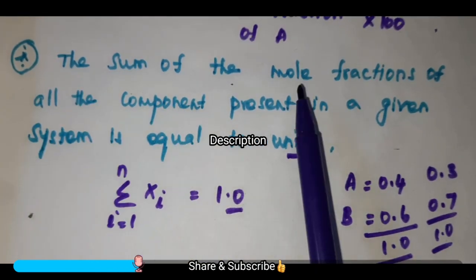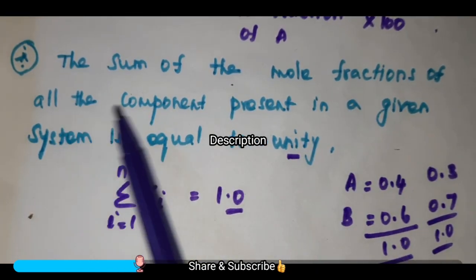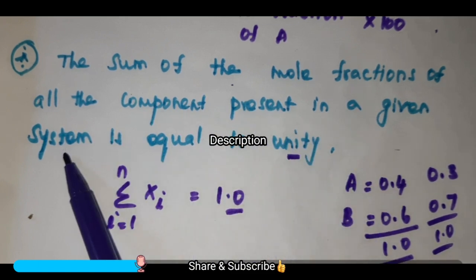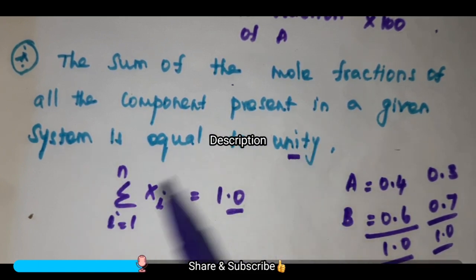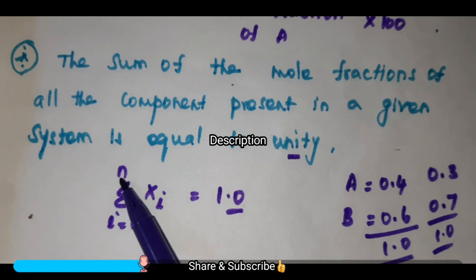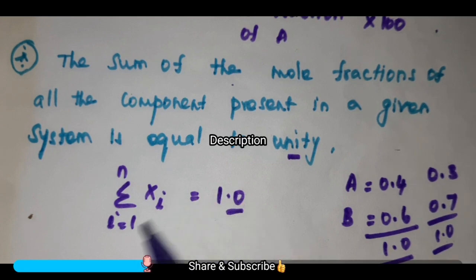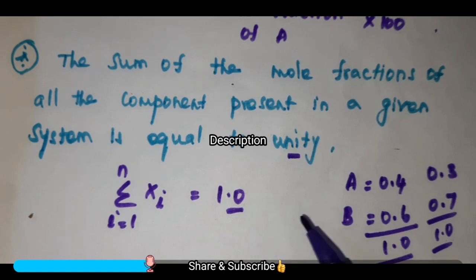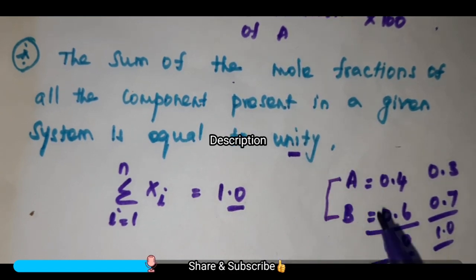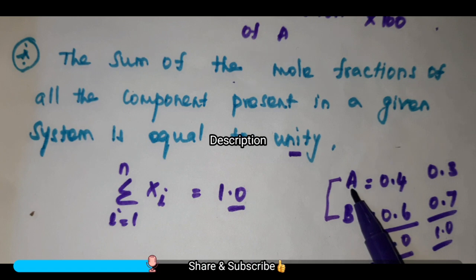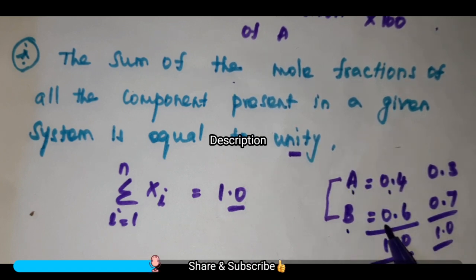The next important point is: the sum of the mole fractions of all the components present in a given system is equal to unity. That is, summation from i equal to 1 to n of x_i (mole fraction) is equal to 1. For example, consider a binary system: if the mole fraction of component A is 0.4, obviously the mole fraction of component B is 0.6, and if you sum up you will get 1.